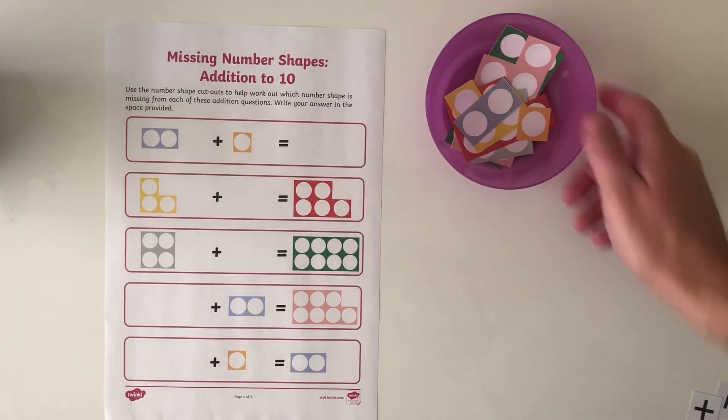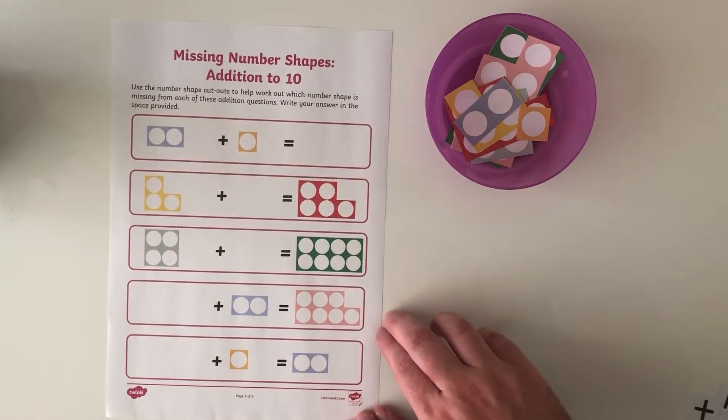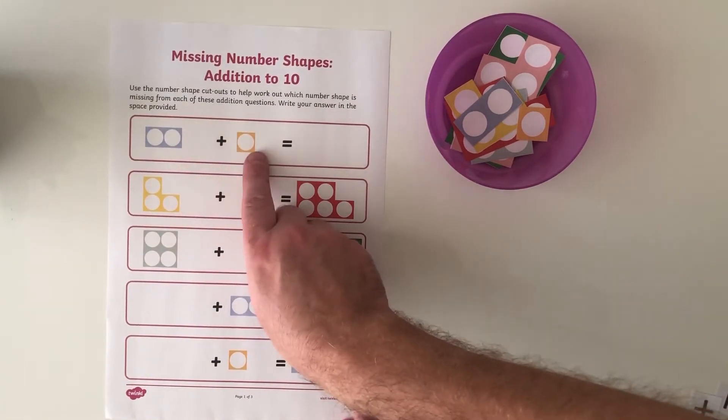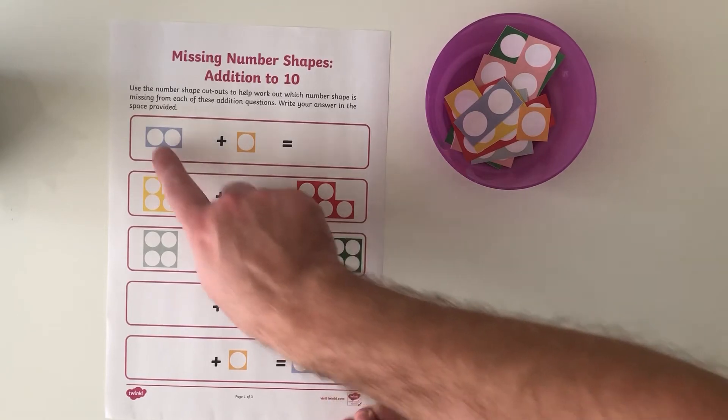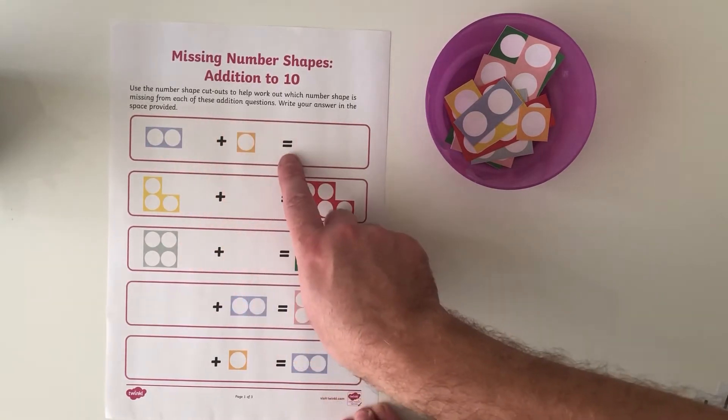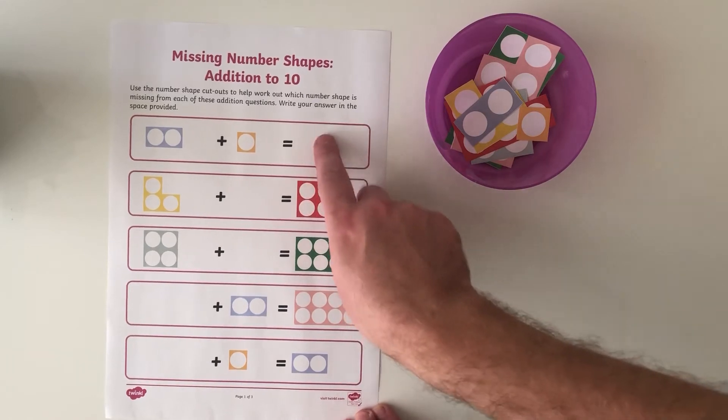Once you've cut out your number shapes we can take a look at the number sentences. Here I've got two different amounts which I'm going to need to add together and then I'm going to find out what they are equal to or they're worth the same as.